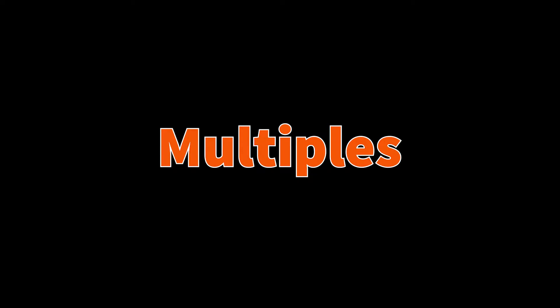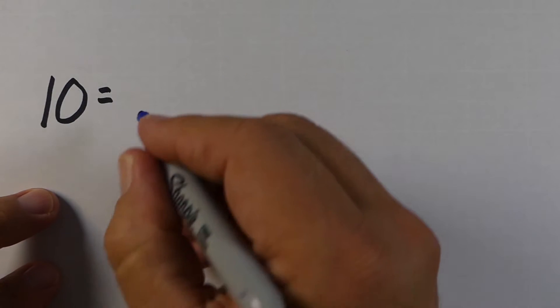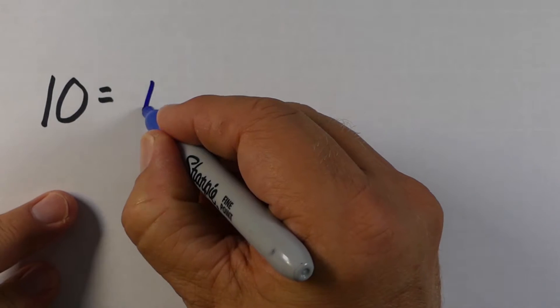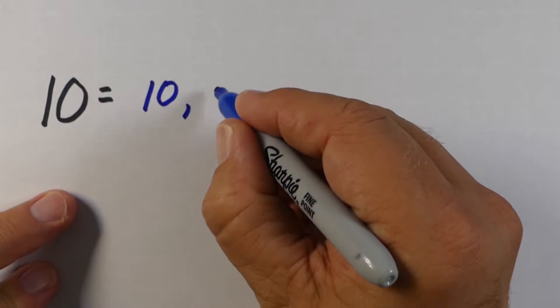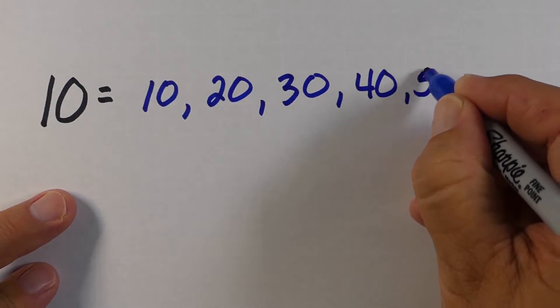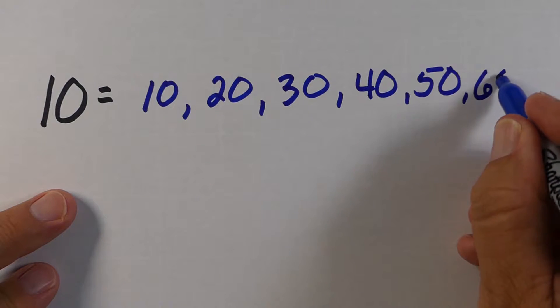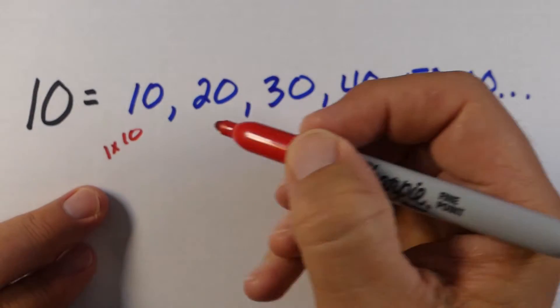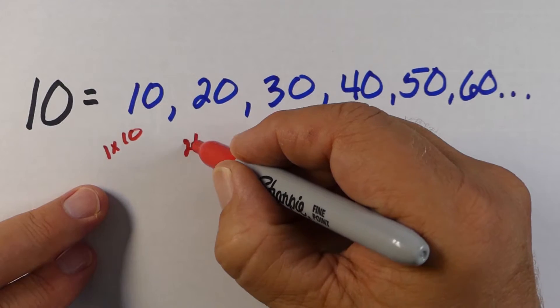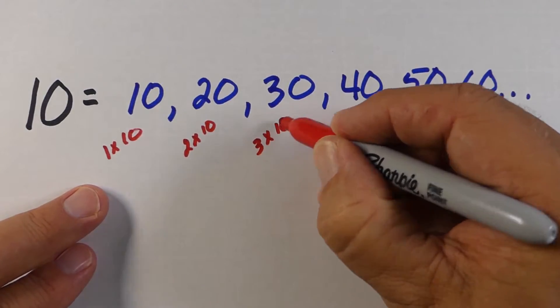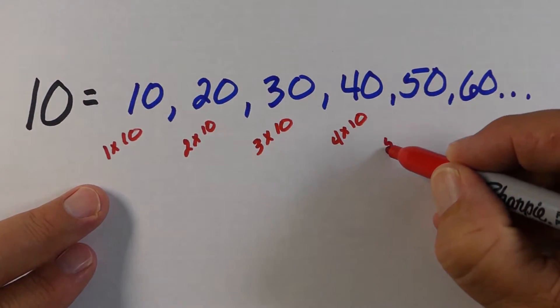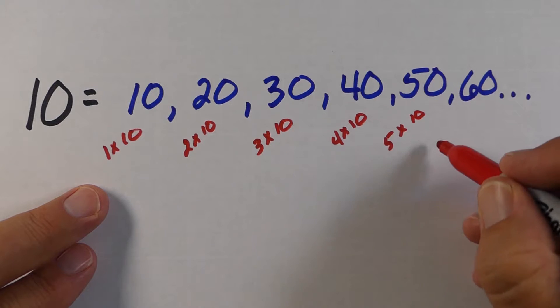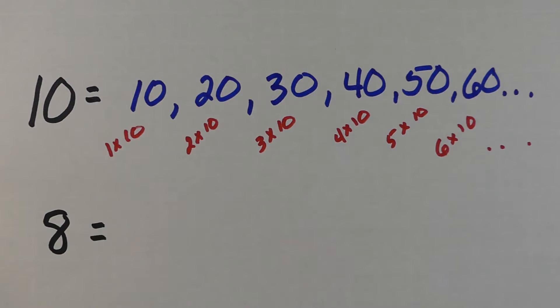Now multiples are a little bit different. Multiples are basically where you take a number — in this case ten — and you start multiplying it by one, by two, by three, and so on. So in this case: ten, twenty, thirty, forty, fifty, sixty, and so on. There's no end to the multiples, they go on forever. It's just five times ten, six times ten, and so on.